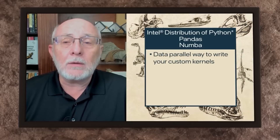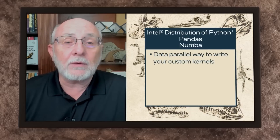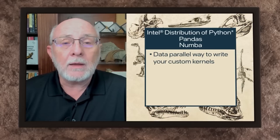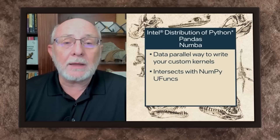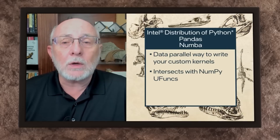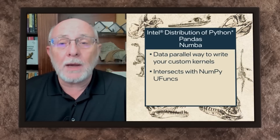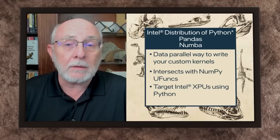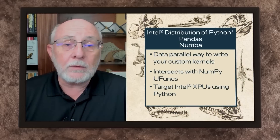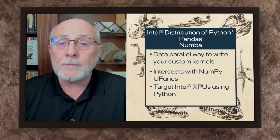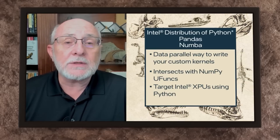Numba is a data-parallel way to write your custom kernels to get accelerations either on GPUs or on CPUs, and to do data parallelism through threading. Numba also has a sweet spot at the intersection with NumPy ufuncs. We cover Numba in a workshop on data parallel essentials for Python, which demonstrates high-performance code targeting Intel XPUs using Python — applying to Intel CPUs such as Xeon and Core, as well as Intel GPUs.